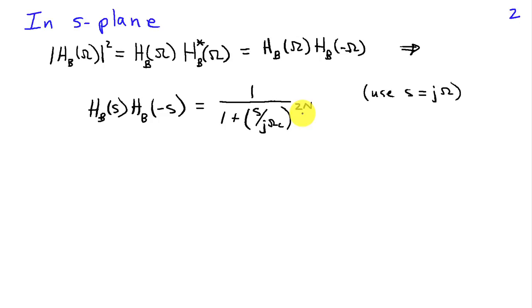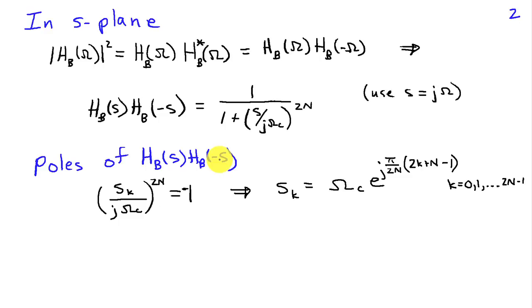From this expression, we can deduce where the poles of this filter are located. In particular, we see that the poles of Hb of s times Hb of minus s have to satisfy Sk divided by j omega c raised to the 2n power is equal to minus 1. You can do the algebra to conclude that Sk is omega c times e to the j pi over 2n times 2k plus n minus 1 for k equals 0, 1 through 2n minus 1.